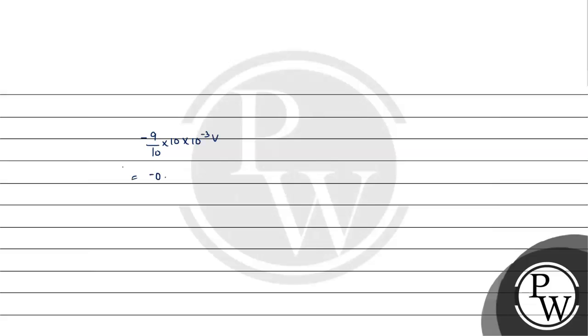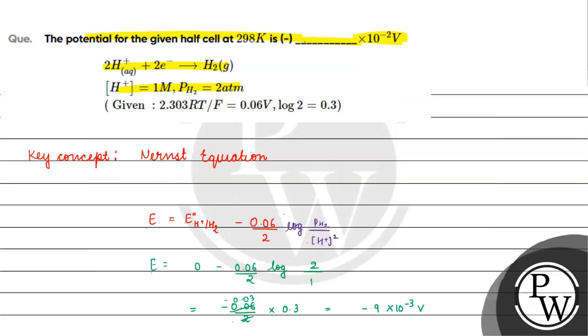This gives minus 0.9 into 10 raised to the power minus 2 volts. The answer here is 0.9, as the minus sign is already given in the question. The correct answer for this question is 0.9 in our blank. I hope you understood it well. Thank you and all the best.